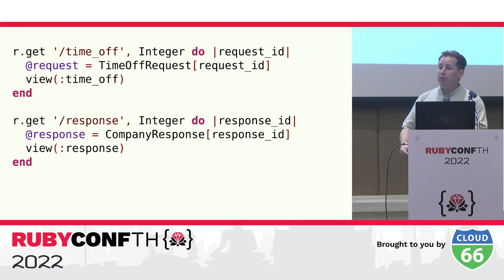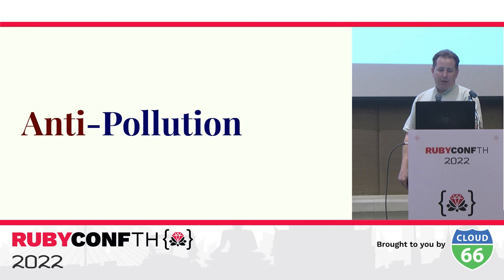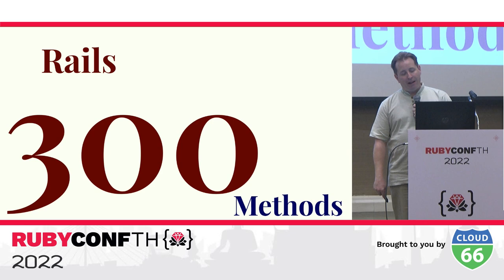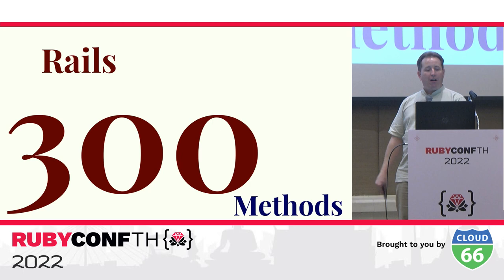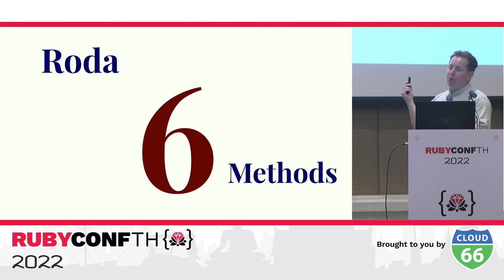Unfortunately, if you're using Sinatra this approach does not work. Sinatra uses the 'request' instance variable internally to store information related to the HTTP request, so if you do this Sinatra will raise an exception later. Similarly, Sinatra stores the HTTP response in the 'response' instance variable, so that will also raise an exception. Roda avoids these problems by prefixing all internally used instance variables with an underscore. Unfortunately, when it comes to method pollution, Rails does not fare nearly so well — as of Rails 7, inside a Rails controller action there are over 300 additional methods not prefixed by an underscore beyond the methods defined by default by Ruby in Object.